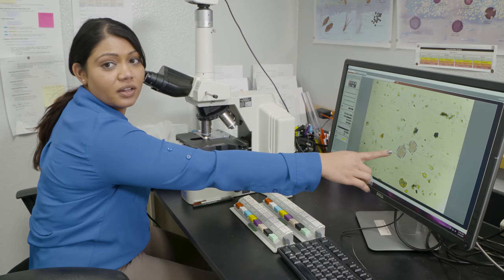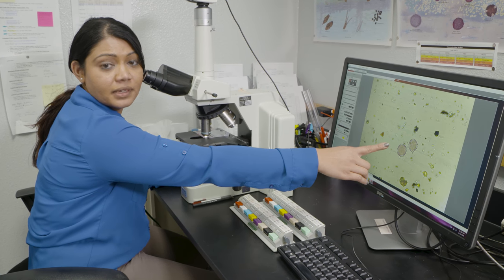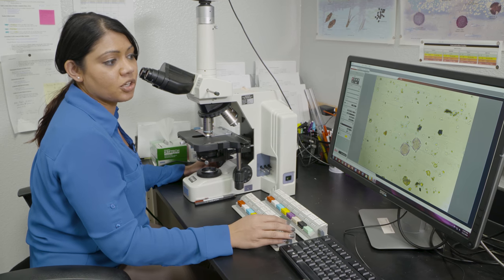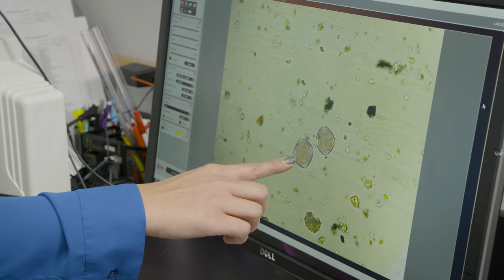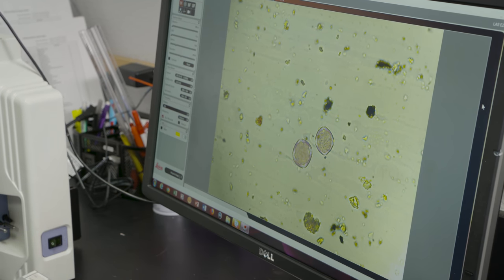This is ash pollen, which is what we're seeing right now. This actually signals the start of our pollen season here. Then we'll get mulberry, and then olive. You'll have oak in there.